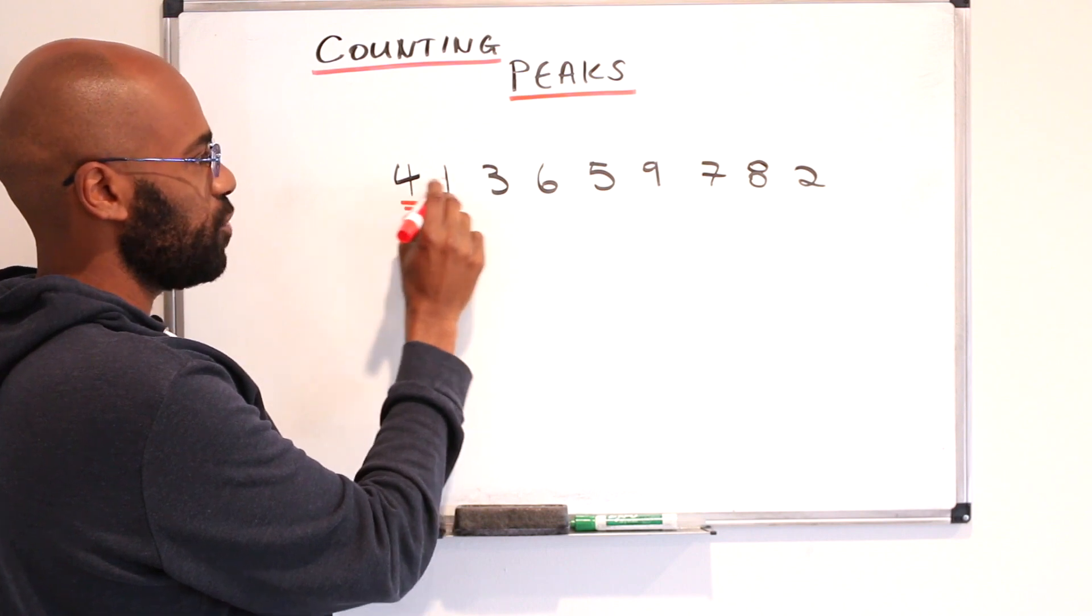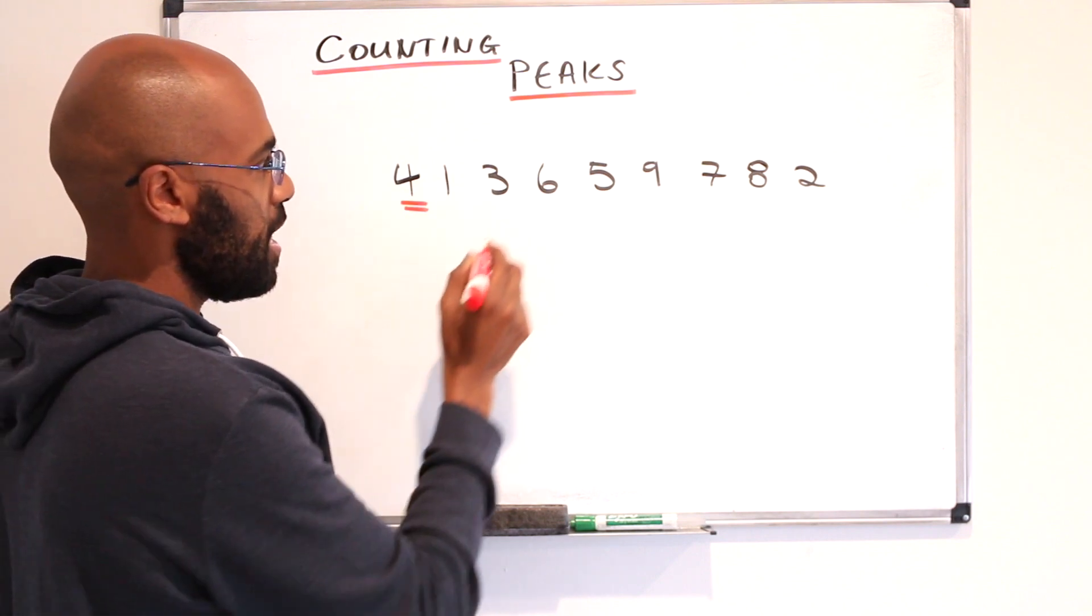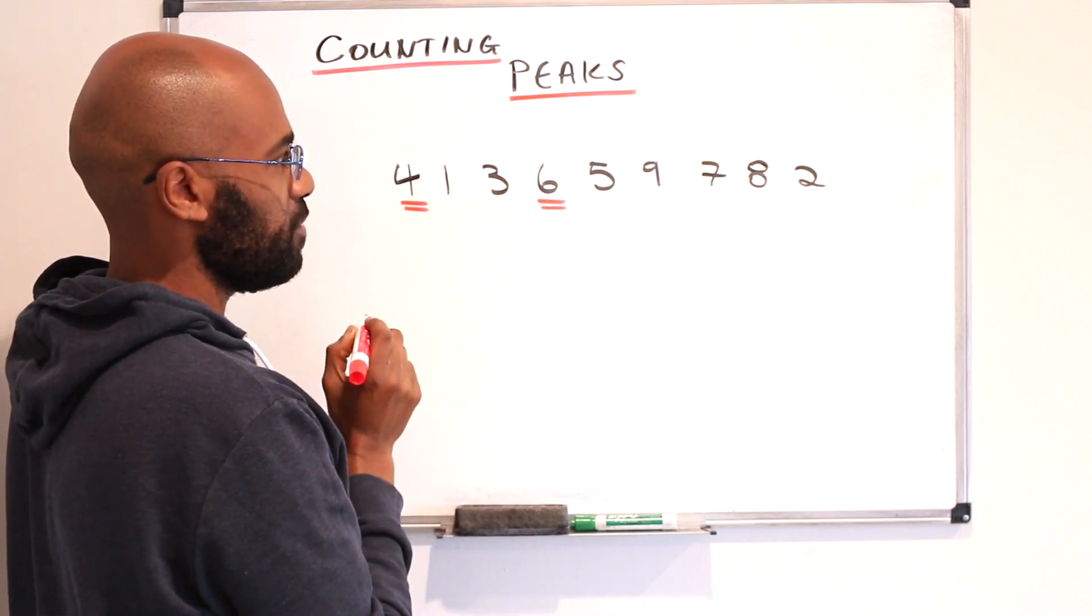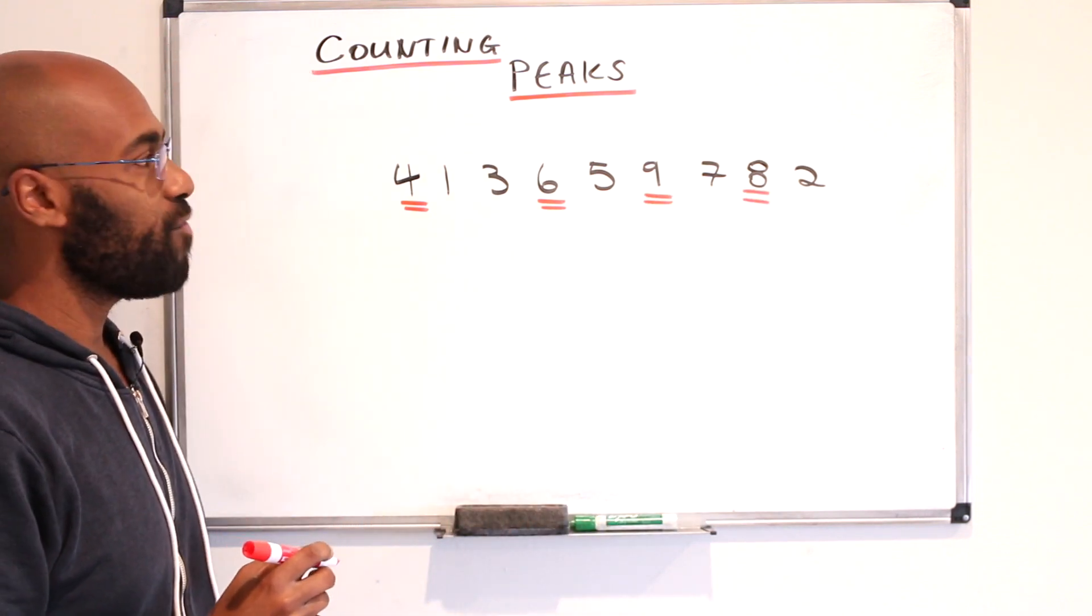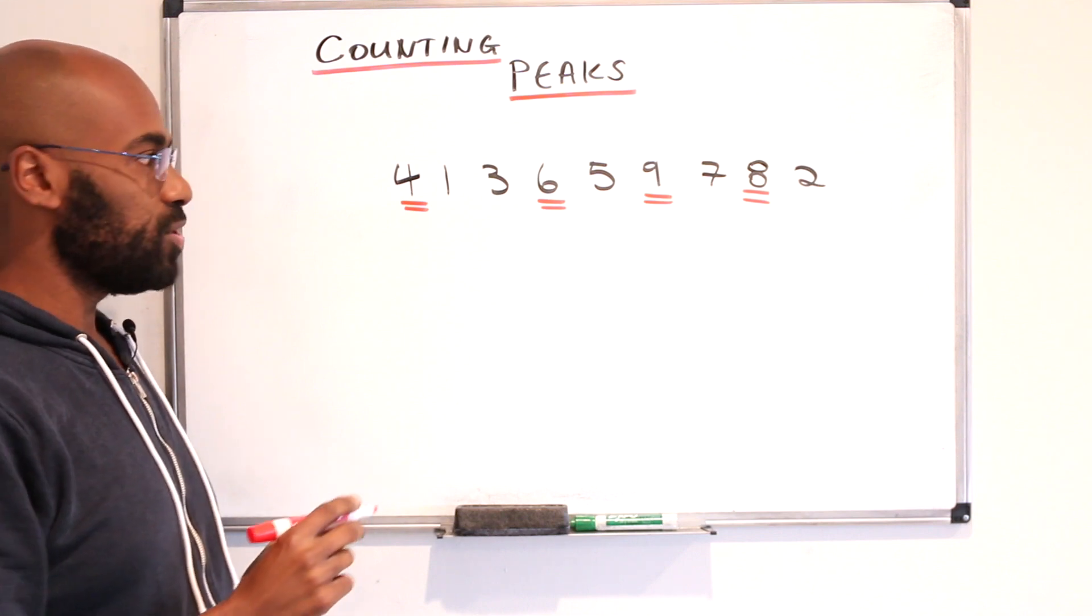For example, this number is larger than any number next to it, and this number is larger than any number next to it. 9 automatically is, and then the 8 is as well. So here we have four numbers that are larger than all the numbers next to it.